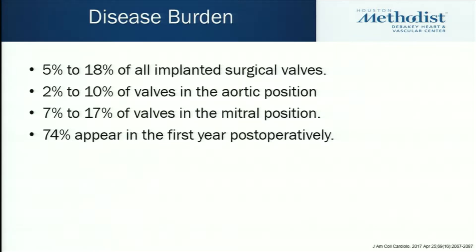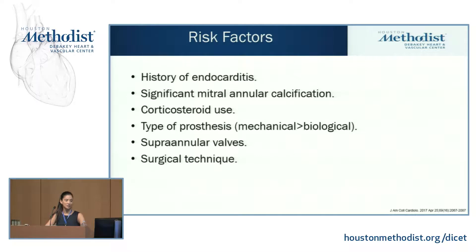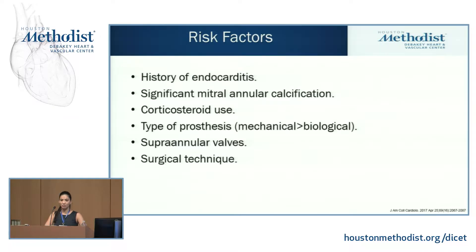Perivalvular leaks complicate about 5% to 18% of all implanted surgical valves. They're detected in 2% to 10% of valves in the aortic position and 7% to 17% of valves in the mitral position. Usually 74% are diagnosed in the first year postoperatively. Risk factors for developing perivalvular leaks include a history of endocarditis, significant mitral annular calcification, steroid use. Mechanical valves have a high risk of developing PVLs compared to bioprosthetic valves. Supraannular valves are also more likely to develop PVL, and continuous sutures pose a greater risk compared to interrupted sutures.